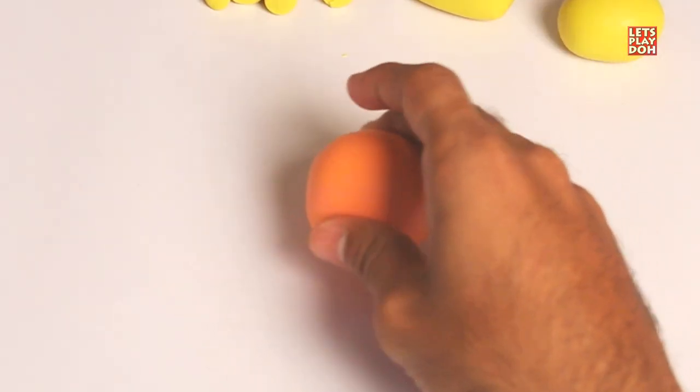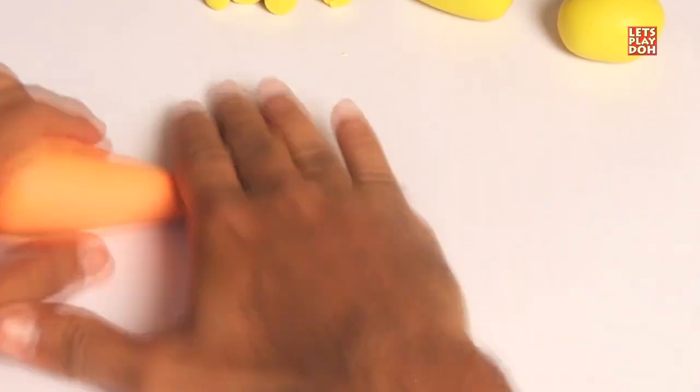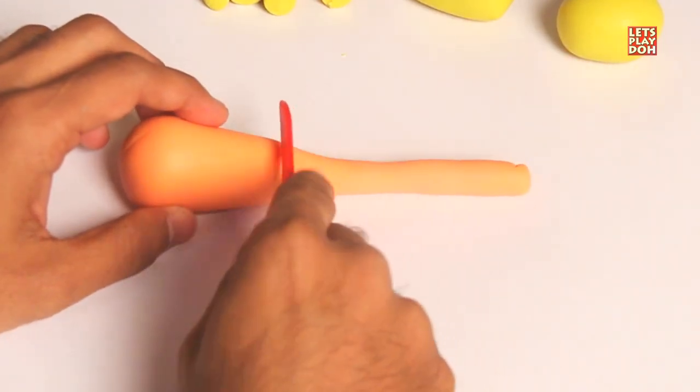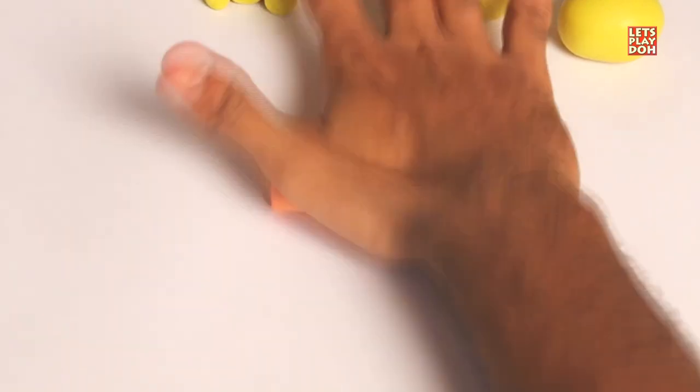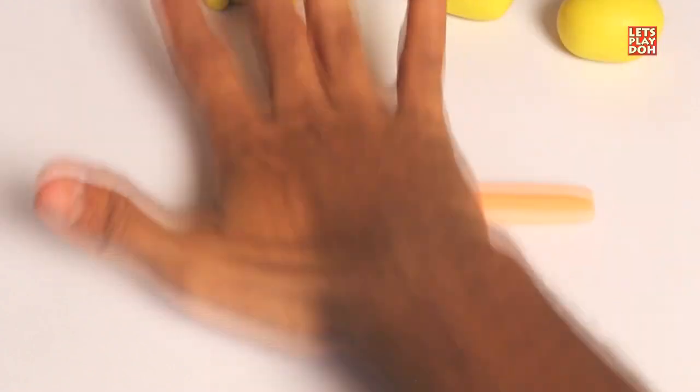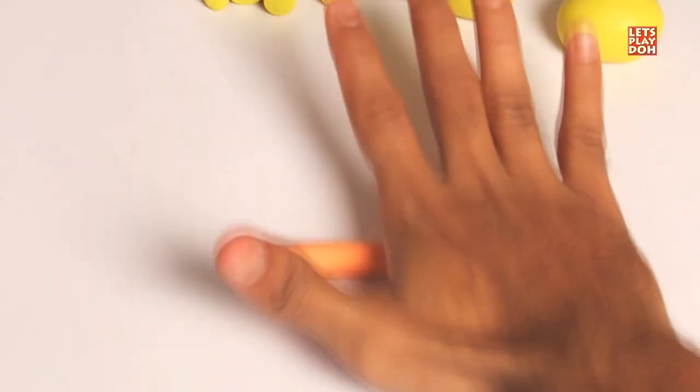Now let's take the orange piece of Play-Doh and roll it so that you have a thin part on one end and a thick part on the other like we did before. And go ahead and use the Play-Doh knife to make a cut. And then the long orange tube just keep rolling it on a flat surface back and forth. Making it nice and even.